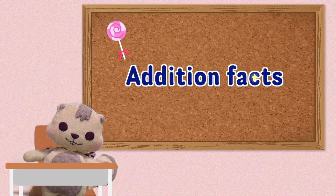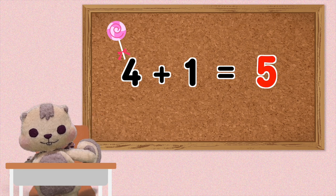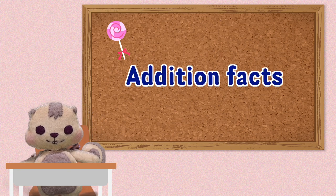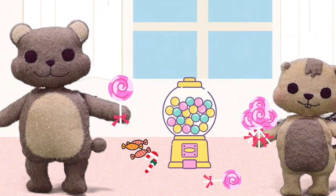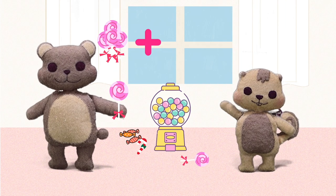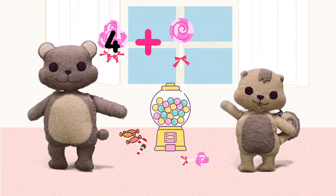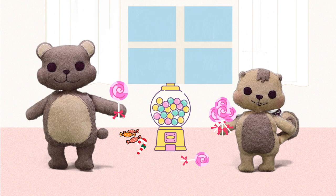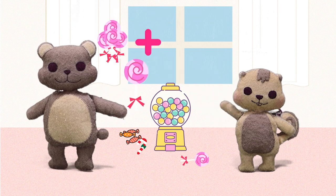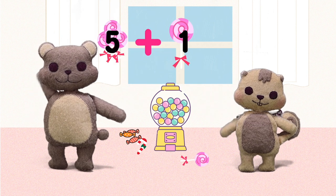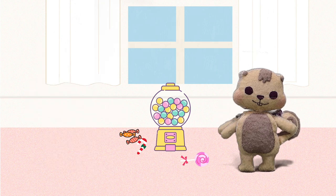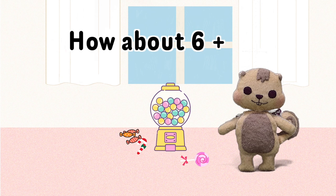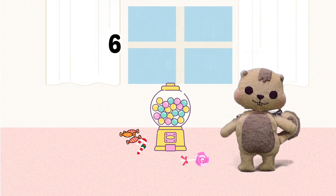Learn our addition facts! Let's do addition together! 4 lollipops plus 1 lollipop: 4 plus 1 equals 5. 5 lollipops plus 1 lollipop: 5 plus 1 equals 6. How about 6 plus 1? 6 plus 1 equals 7.